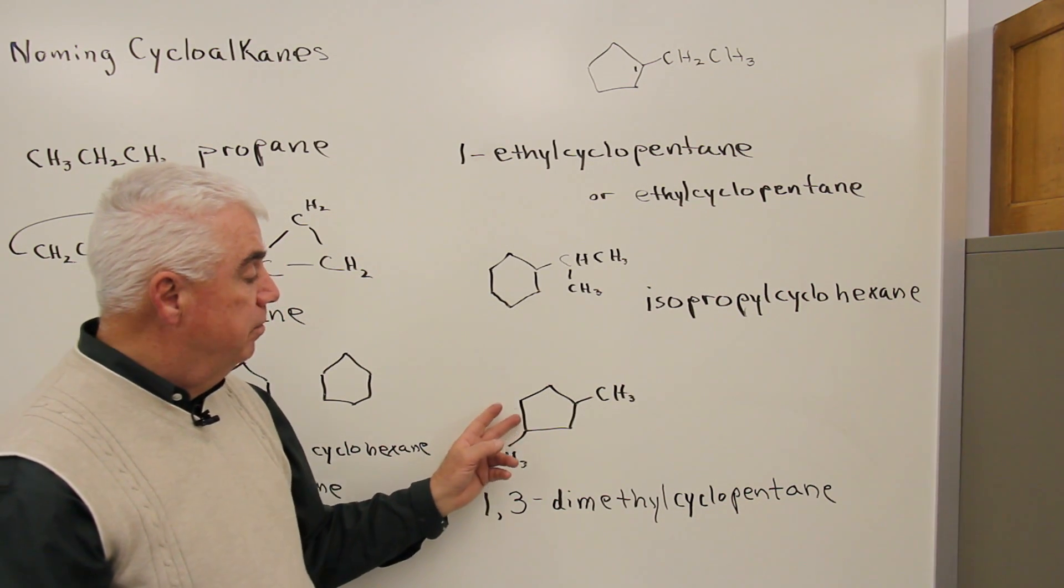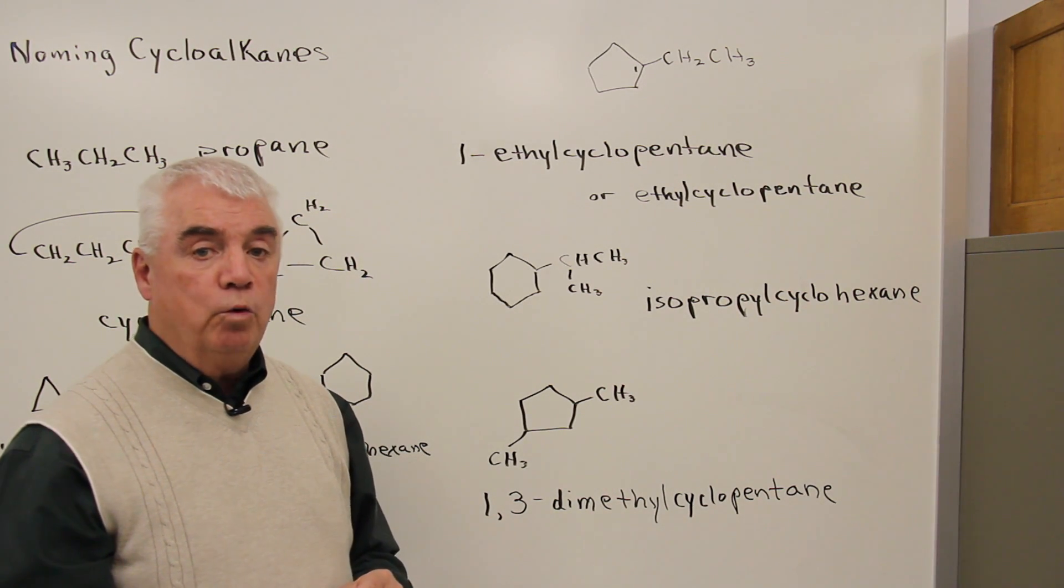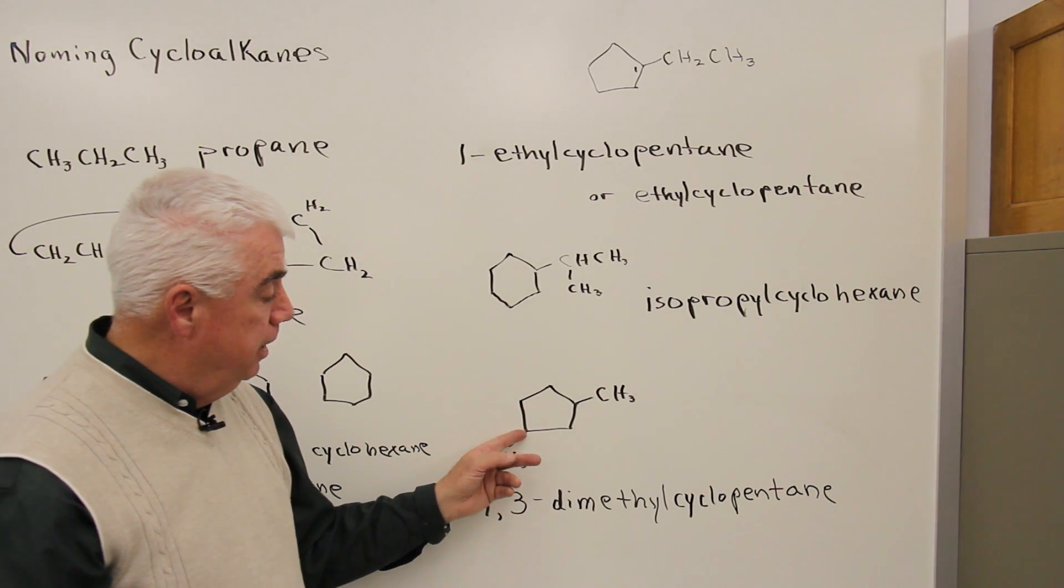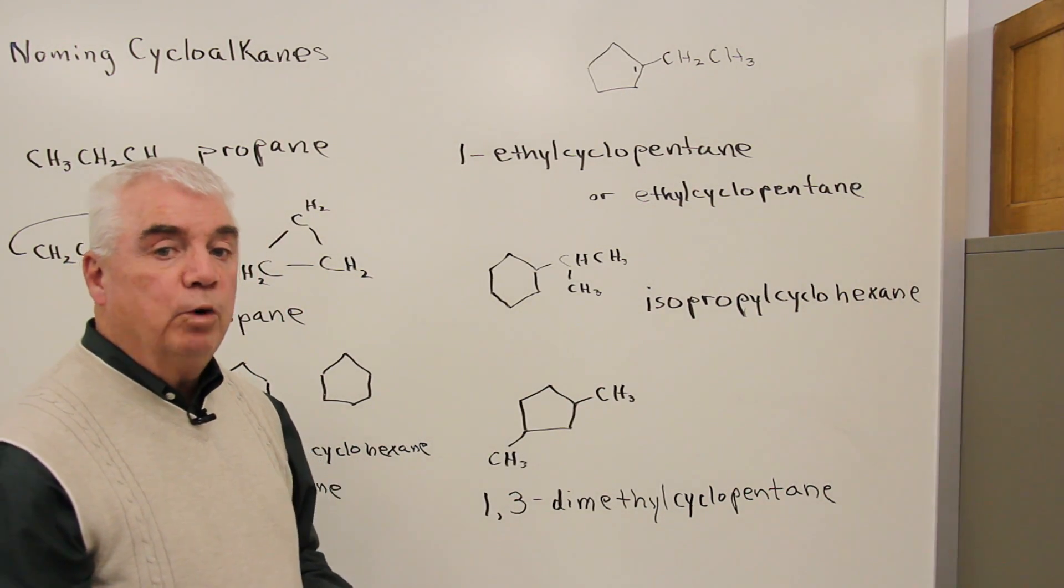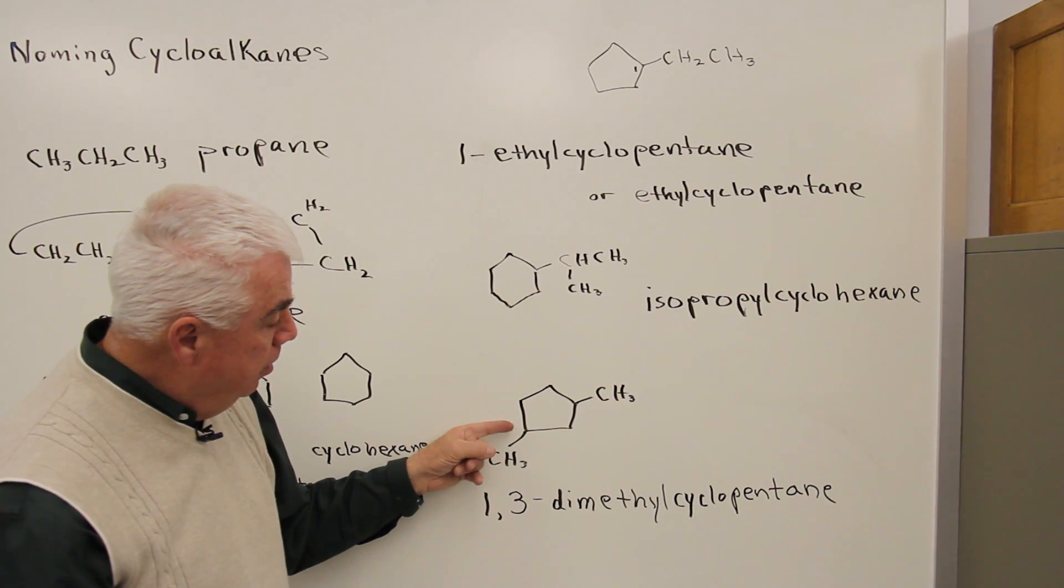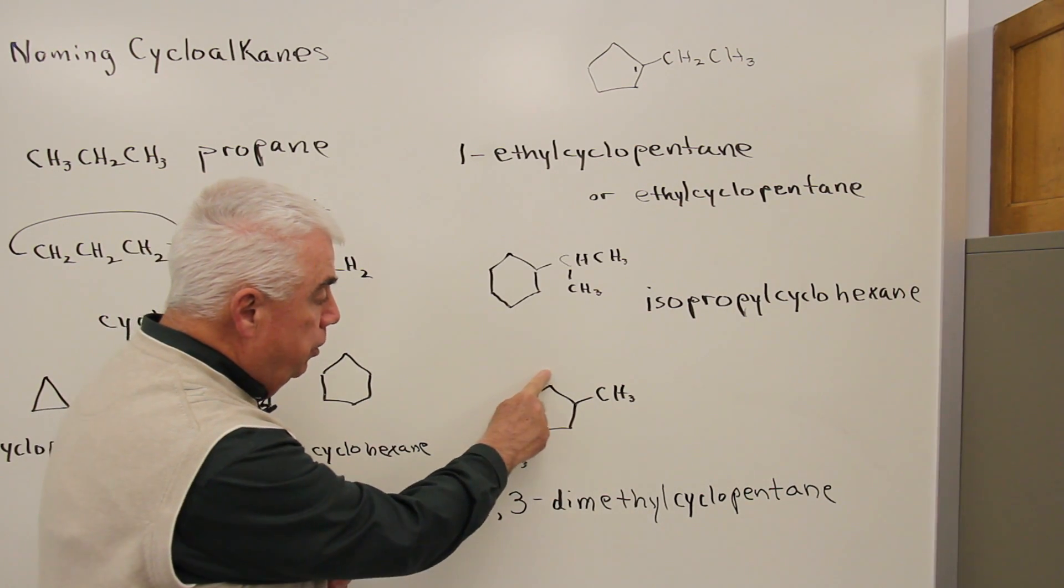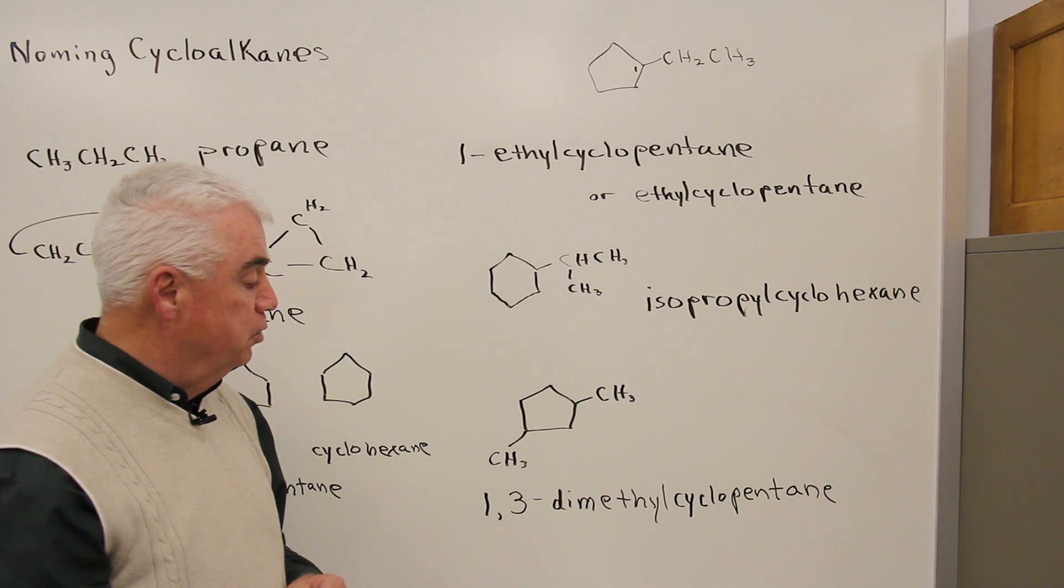And again now, with the ring we could start numbering anywhere, but we want to give the lowest numbers to the positions of the groups. It doesn't matter whether I begin here or up here, but it does matter which way we go around the ring. So if I were to start here and call this position one, go one, two, three, four, I've got methyl groups at positions one and four.